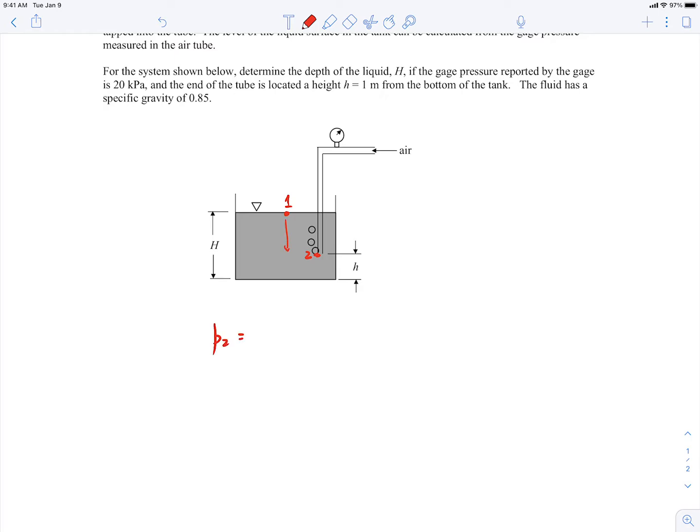So pressure at two, just working this way, pressure two is going to be the pressure at one plus the density of that liquid. I'll just call it ρL times g times the depth, which should be capital H minus little h.